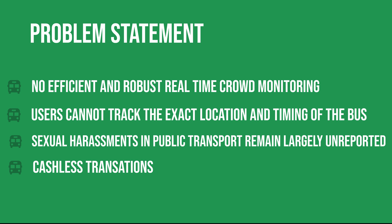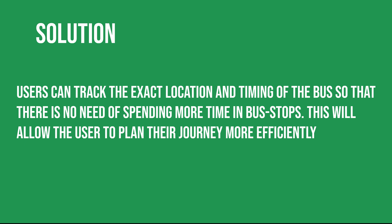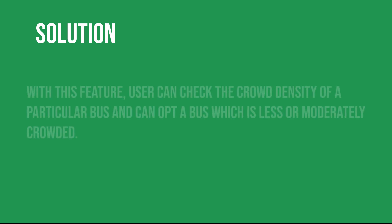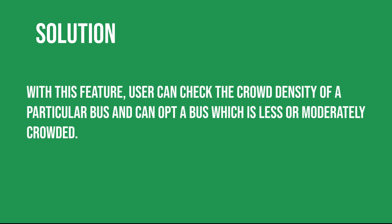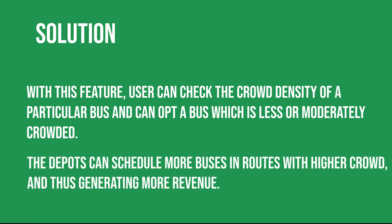The solutions we implement to solve these problems: users can track the exact location and timing of the bus, so there is no need to spend more time at a particular bus stop. This will allow users to plan their journey more efficiently. Users can also check the crowd density of a particular bus and opt for a less crowded one. Depots can schedule more buses on routes having higher crowd, thus generating more revenue.